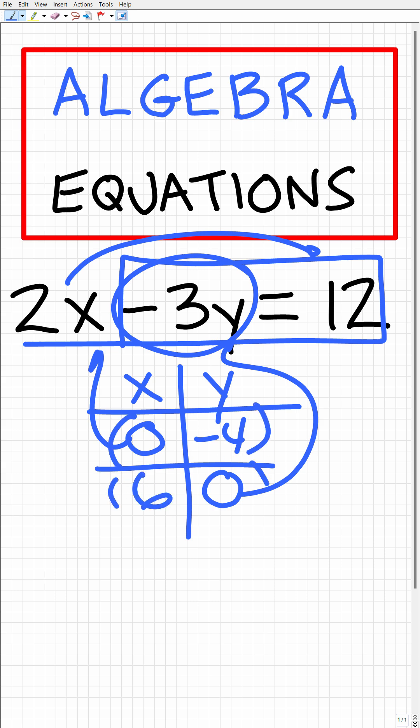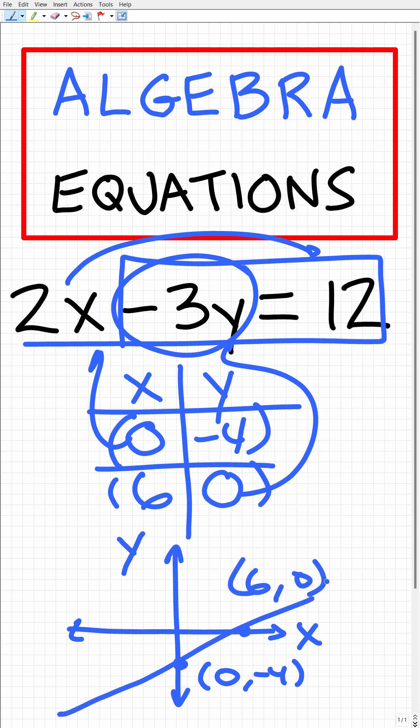These are the two points where the line crosses the x and y axis, so we can quickly sketch it. Here's x and here's y. The point (0, -4) would be about right there, and our other coordinate (6, 0) would be about right here. The graph of this line will look something like that.